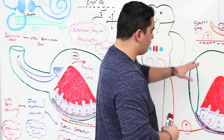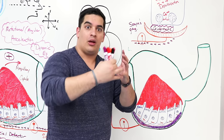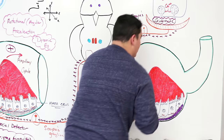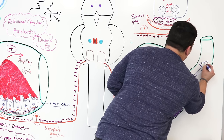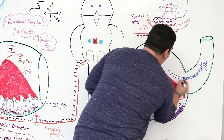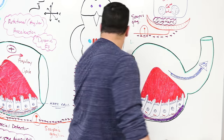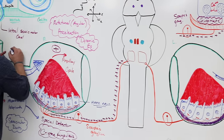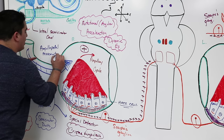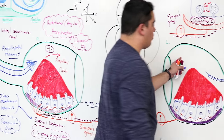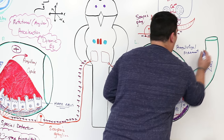Now we're rotating to the right. Due to inertia the fluid stays stationary while the semicircular canals rotate. The endolymph flows in one direction. They call flow toward the cupula ampullo-pedal movement, which bends the cupula. Flow away from the cupula is called ampullo-fugal movement.